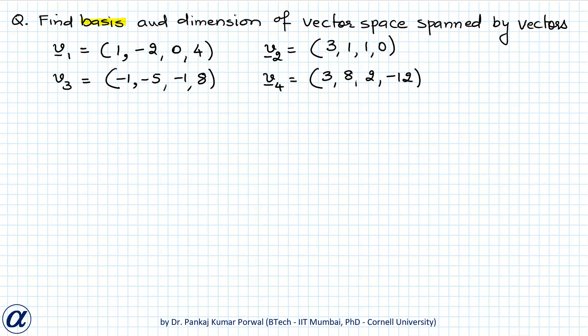In this question we want to find the basis and dimension of the vector space spanned by vectors v1, v2, v3 and v4. We know that the dimension of a vector space is the smallest number of linearly independent vectors that span the vector space. Since our vector space is spanned by v1, v2, v3 and v4, the dimension will be the number of linearly independent vectors among these four vectors. To find that, we will use the matrix rank method where these four vectors form the columns of our matrix.